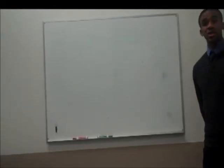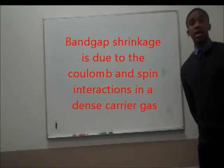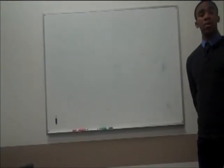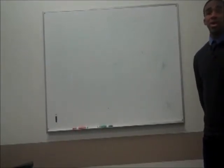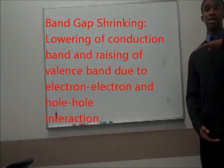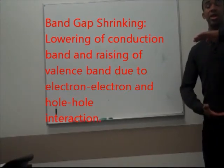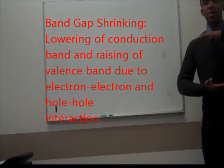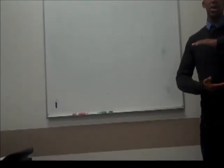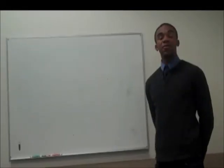In band gap shrinkage, injected electrons will occupy the bottom of the conduction band. If the density is sufficiently high, electrons will interact through the Pauli principle and Coulombic potential. This interaction will lower the electrons' energies and reduce the energy of the conduction band edge. The same thing happens to the holes, raising the valence band edge energy. The result is the shrinkage of the band gap, which modifies the absorptivity and therefore the refractive index, once again through Kramers-Kronig integrals.